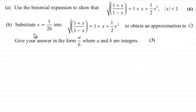Now in part B, we're asked to substitute x equals 1 over 26 into this answer to obtain an approximation to root 3, and give your answer in the form A over B, where A and B are integers, for 3 marks.